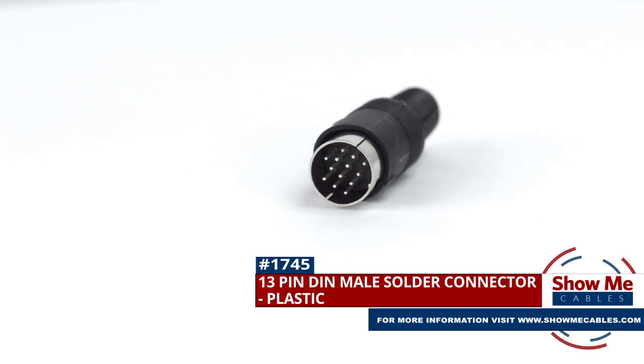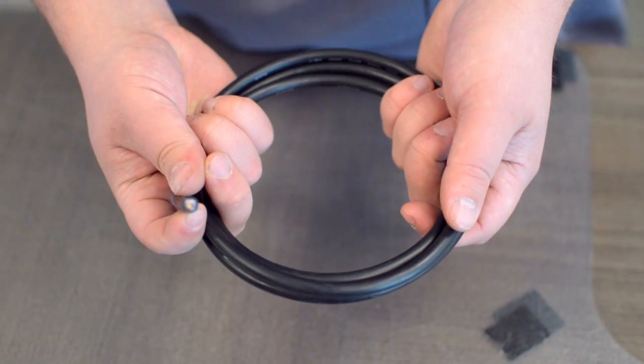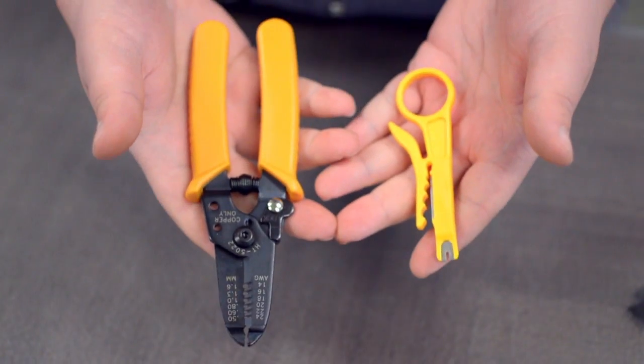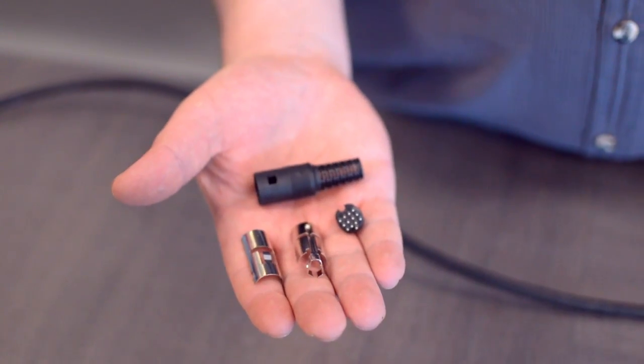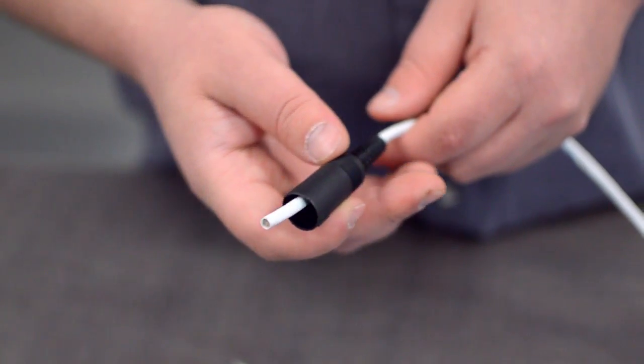To install, you will need the following items: low voltage cable, wire strippers, solder and soldering iron, and the DIN connector. Start by inserting the plastic boot over the jacket.